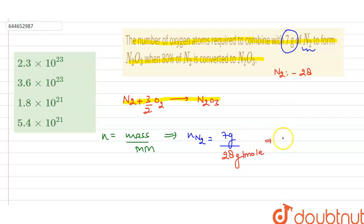On solving it, we get the number of moles of N2 as 1 by 4 mole, which can be written as 0.25 mole. So the number of moles present in 7 gram of N2 is 0.25 mole.